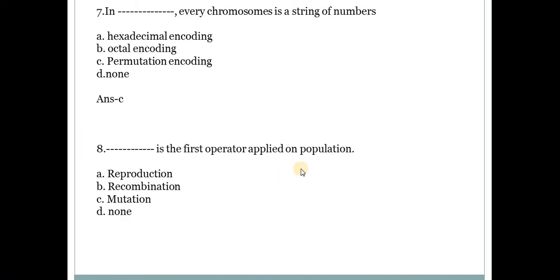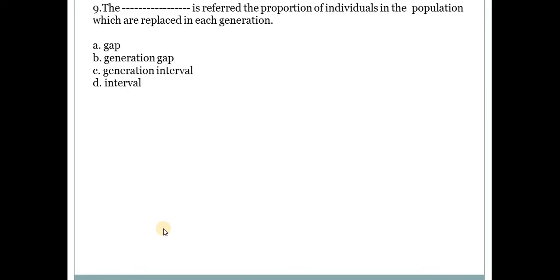Next question, what is the first operator applied on population? The operator applied on population is called reproduction A. Next question is the dash is referred the proportion of individuals in the population which are replaced in each generation. Answer is B, generation gap. Generation gap is the element which defines the proportion of individuals in the population.